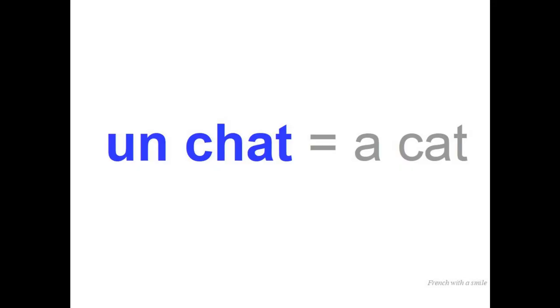In French, when we have a noun, we need a determinant — like 'a cat,' 'the cat.' We need a determinant all the time, even in the plural. In English you don't always need it; in French we do. The determinant is masculine if the noun is masculine, feminine if the noun is feminine. So a cat is going to be: un chat. Un chat. Once again: un chat. Together: un chat.